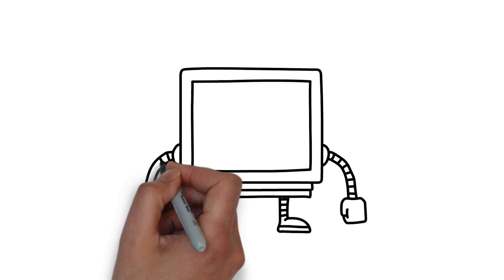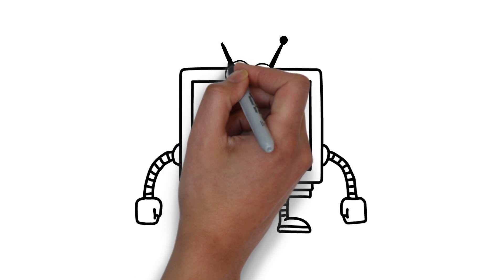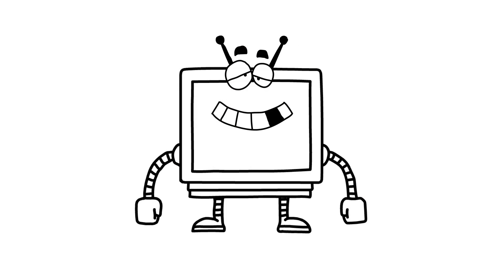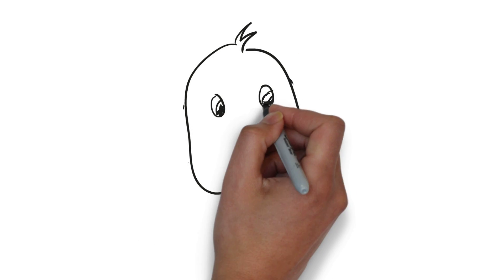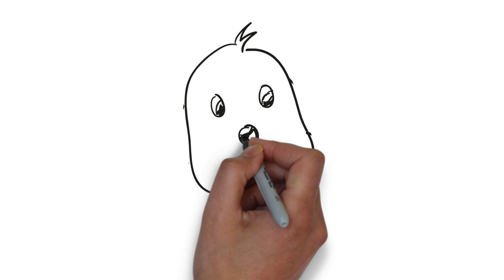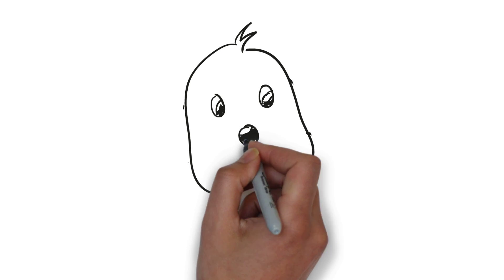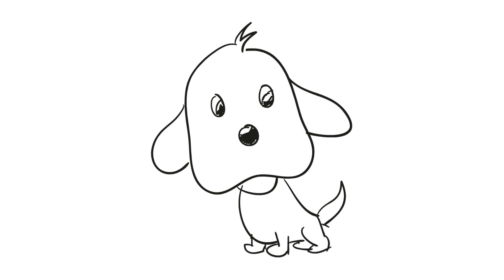Computer programs need to be written in a language that a computer can understand. Computers are powerful and very fast, but despite giving the appearance of being powerful and intelligent, computers are actually pretty dumb — dumb, but fast. They need to have instructions written in a language that has simple, clear rules, where everything is broken down carefully, so that there's no possible way they can misunderstand what you mean.